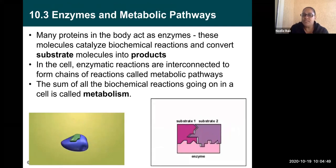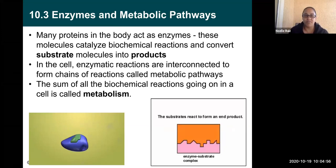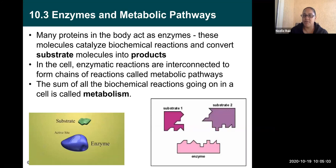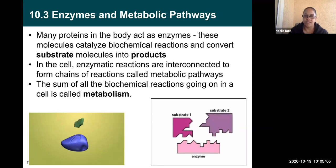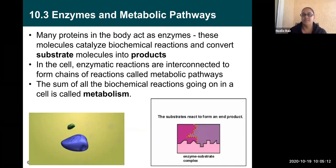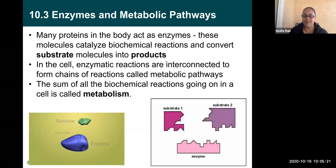Many proteins in the body act as enzymes. These molecules catalyze biochemical reactions and convert substrate molecules into products. In the cell, enzymatic reactions are interconnected to form chains of reactions called metabolic pathways. It's a domino effect — one thing happens, then another, then another. We call those metabolic pathways, and the sum of all biochemical reactions going on in a cell is called our metabolism.